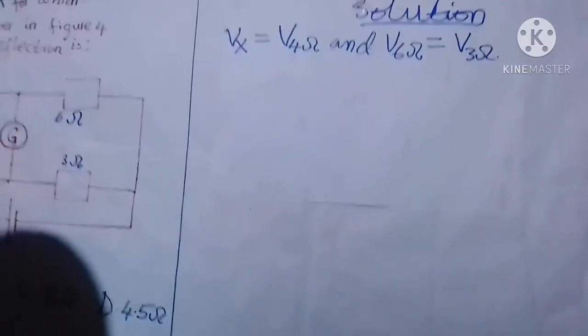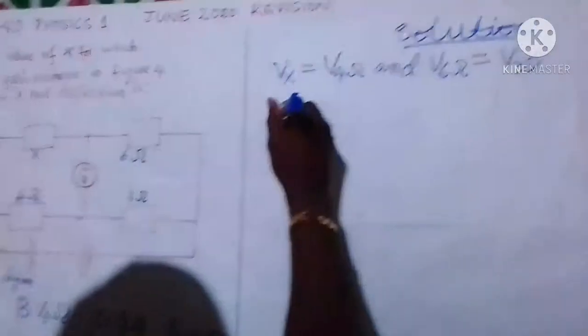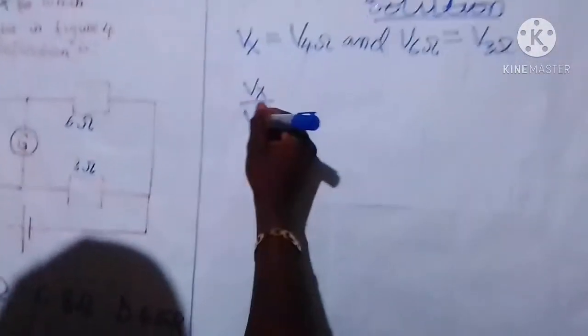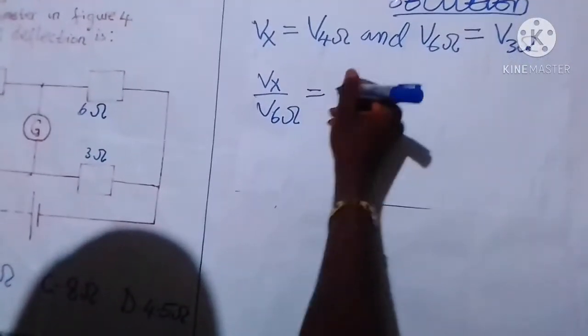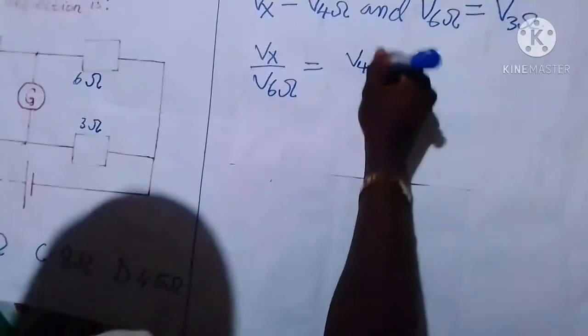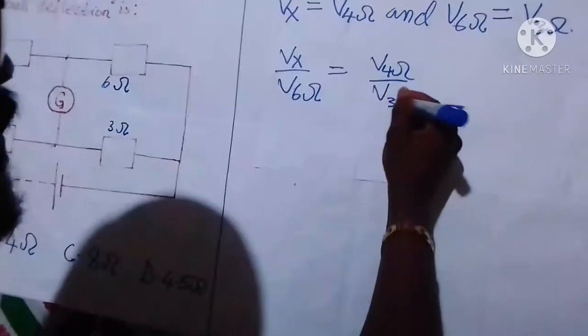Now we can take ratios. Take ratio of this potential to this one, so we have V of X over V of 6 ohms to be equal to V of 4 ohms divided by V of 3 ohms.